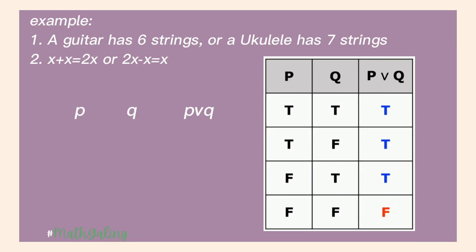Example 1: 'A guitar has six strings' — that is true. Or 'ukulele has seven strings' — that is false. So P or Q will be true. Second: 'x plus x equals 2x' — that's true. Or '2x minus x equals x' — that is also true. So the truth value is true.